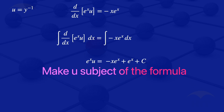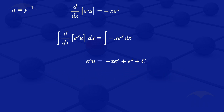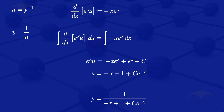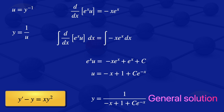We make u the subject by dividing throughout by e^x, giving u equals minus x plus 1 plus c times e to the power minus x. But this is the solution for u; our original equation has dependent variable y. To get the solution for y, we use the substitution u equals y to the power minus 1 and make y the subject: y equals 1 divided by u. Substituting, y equals 1 divided by (minus x plus 1 plus c times e^(minus x)). This is the general solution of y prime minus y equals x y squared.